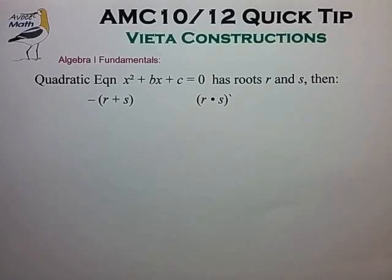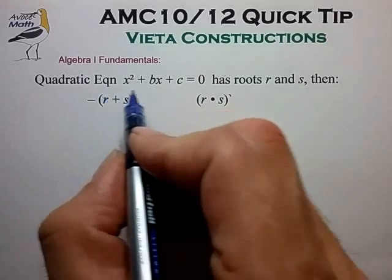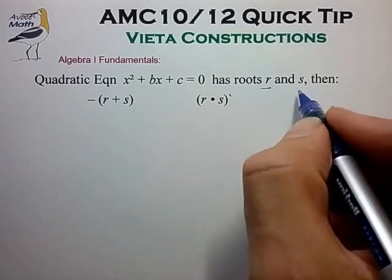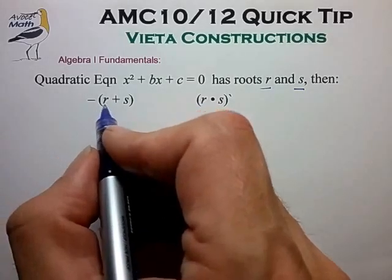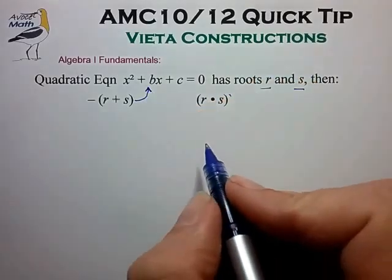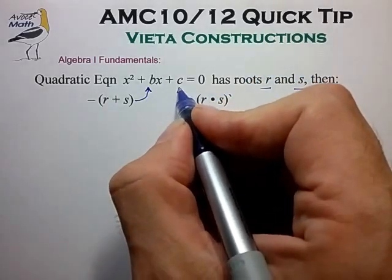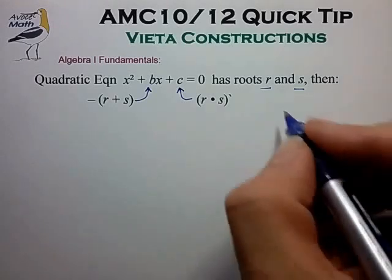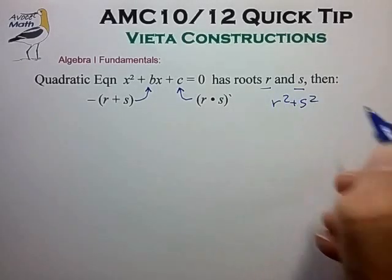In this video we're going to look at some algebra constructions based on the Vieta relations for a quadratic equation. Just to remind you from algebra 1, if we have a quadratic equation divided out by the x squared coefficient, then we can write out two quick relationships for the roots r and s. They are that r plus s is equal to the negative b coefficient, and the product r times s is equal to the c coefficient. What I'd like to do in this video is demonstrate how several other algebra terms involving r and s can be easily computed. One of the more common algebra terms in the AMC is r squared plus s squared.